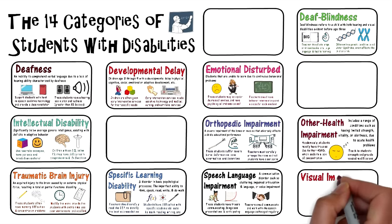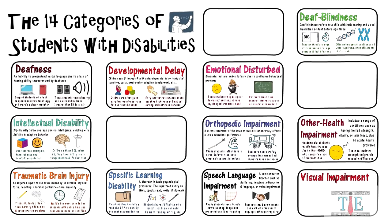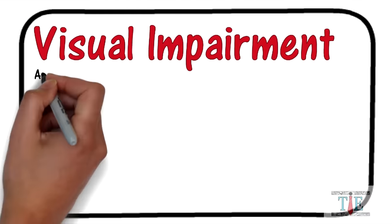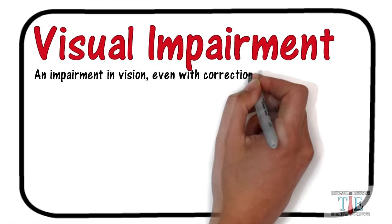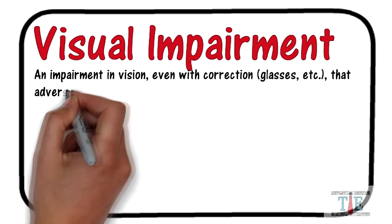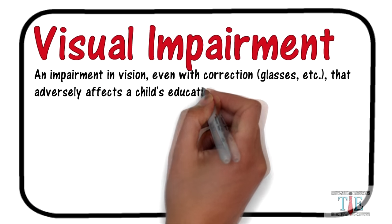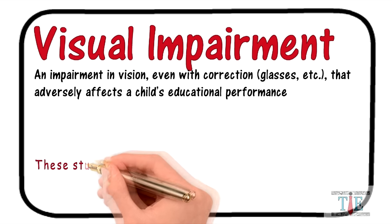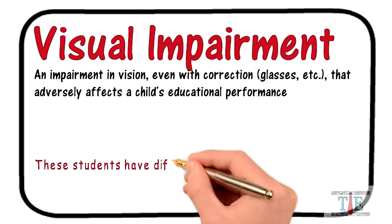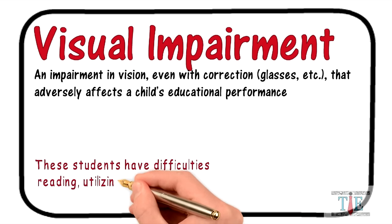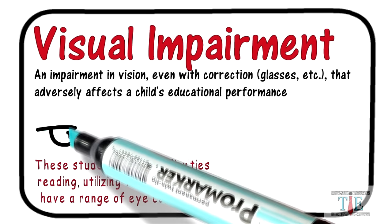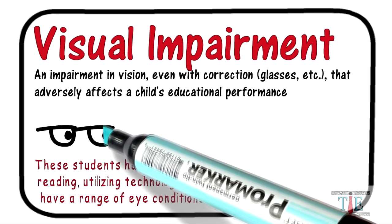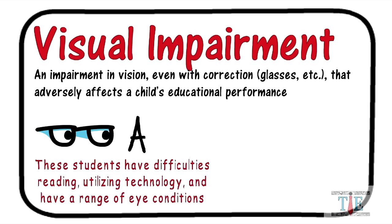Now we're going to move on to visual impairments. This disability is defined as an impairment in vision, even with correction such as glasses, that adversely affects a child's educational performance. These students have difficulties reading, utilizing technology, and have a range of eye conditions. Even if these students have glasses, they still have visual deficits, identifying letters and differentiating them.